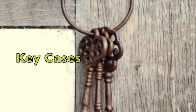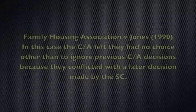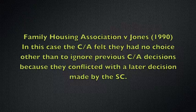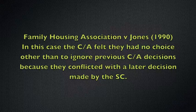A key case to support the information on the Court of Appeal is Family Housing Association v. Jones in 1919. In this case, the Court of Appeal felt they had no choice other than to ignore a previous Court of Appeal decision because it conflicted with a later decision made by the Supreme Court. You could use this as an example showing courts in action.